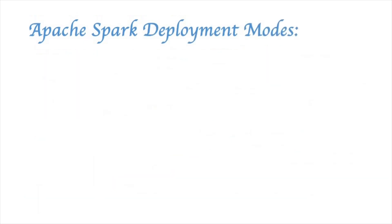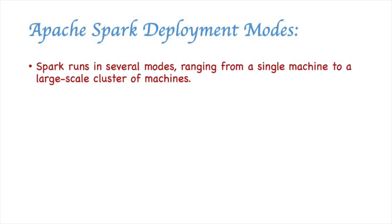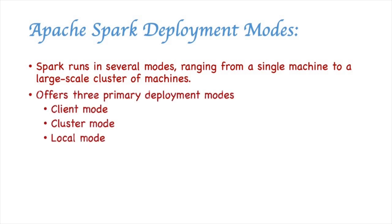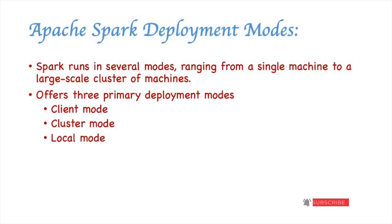Now let's see the different deployment modes in Apache Spark. Spark runs on several modes ranging from a single machine to a large-scale cluster of machines. Spark offers three primary deployment modes: client mode, cluster mode, and local mode. We will see each of these in detail in the upcoming slides.